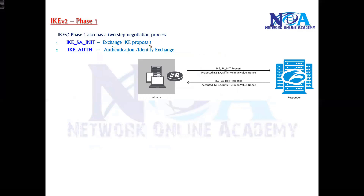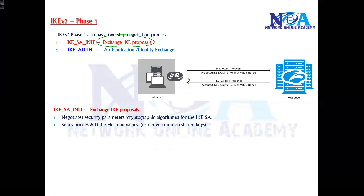In phase one, the first step is exchanging IKE proposals. The initiator — let's say this router is the initiator — sends out the first message called the IKE SA Initiate request, sent from the initiator to the responder on the opposite side.